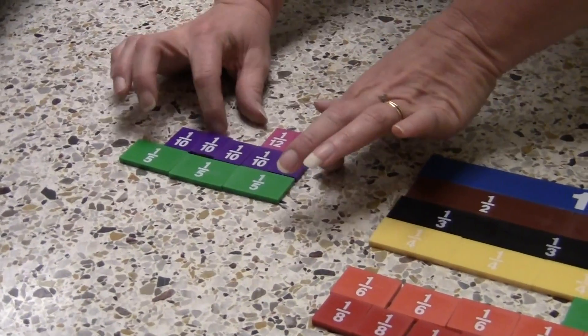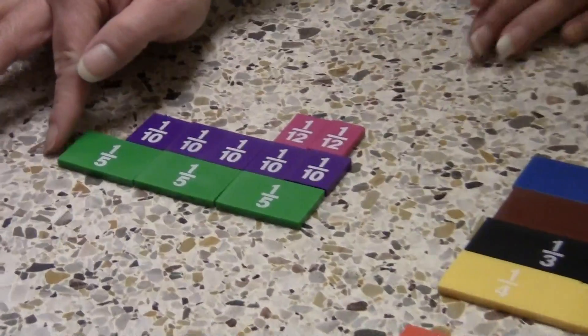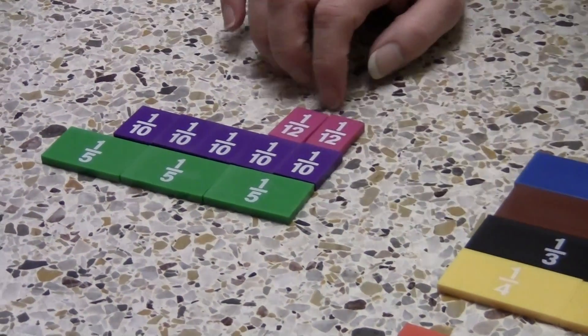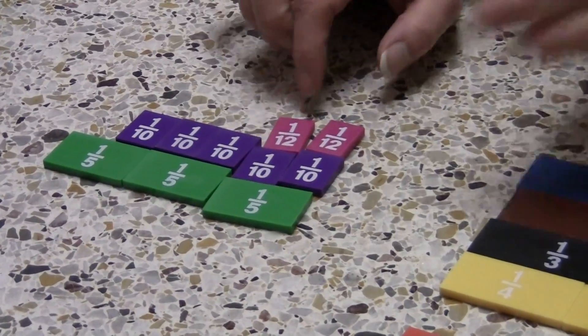By stacking the fraction strips on top of each other, you can see that even though fifths is the smallest denominator, they're actually larger fractions.